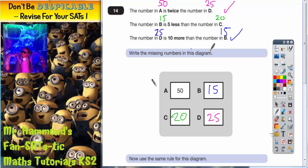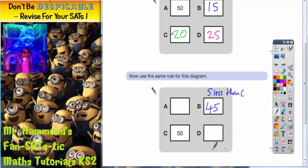D is 10 more than the number in B. So D is going to be 10 more than B. Well, if B is 45, 10 more than that is going to be 55. So there we've got D.